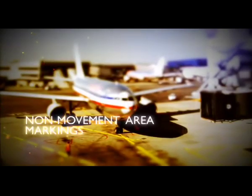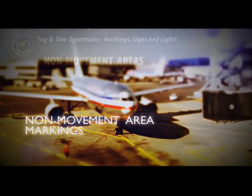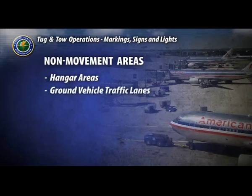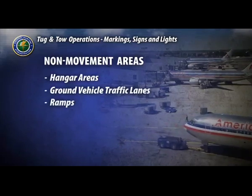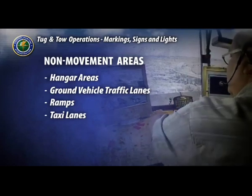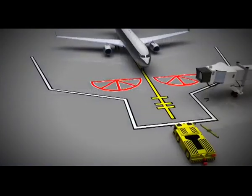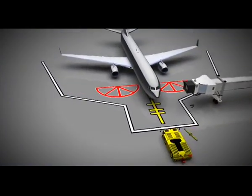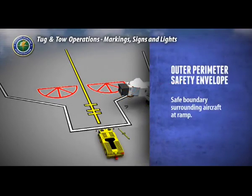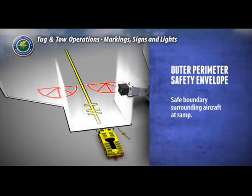This section addresses the markings you will encounter in a non-movement area. Non-movement areas at tower-controlled airports include hangar areas, ground vehicle traffic lanes, and ramps. Taxi lanes may be considered movement or non-movement areas depending on their configuration at individual airports. We will identify the major markings within the ramp area. The outer perimeter safety envelope represents the safe boundary surrounding an aircraft when it resides at the ramp, and is usually represented by a white line outlined in black.